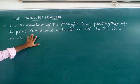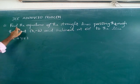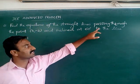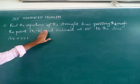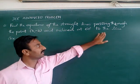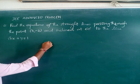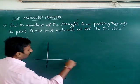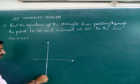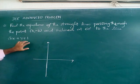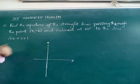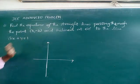See the problem I have taken here, which is from geometry. The problem is given like this: find the equation of the straight line passing through the point (3, -2) and inclined at 60 degrees to the line root 3x plus y equal to 1.